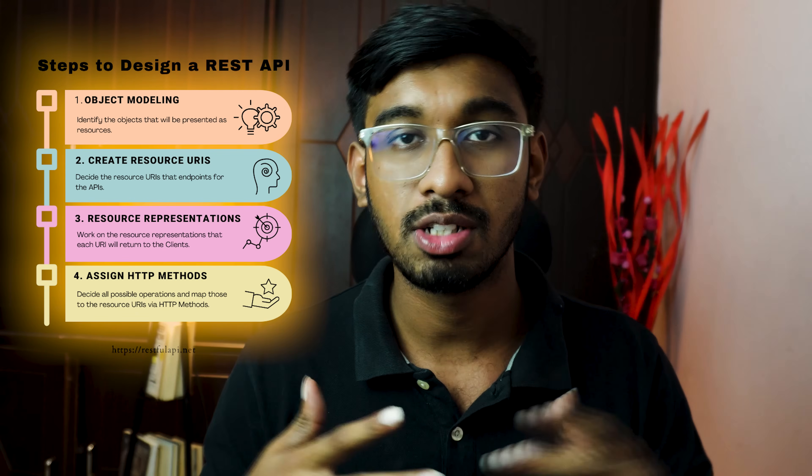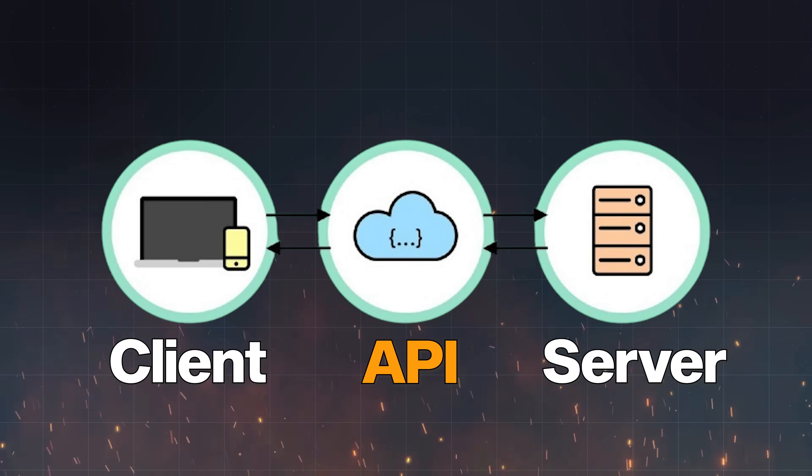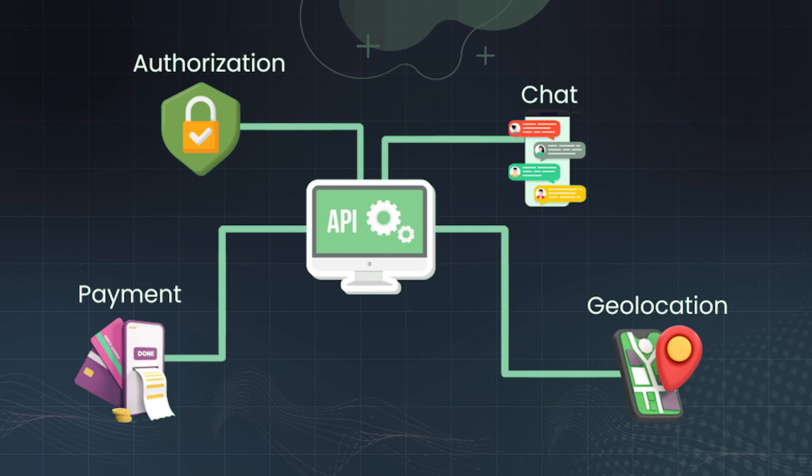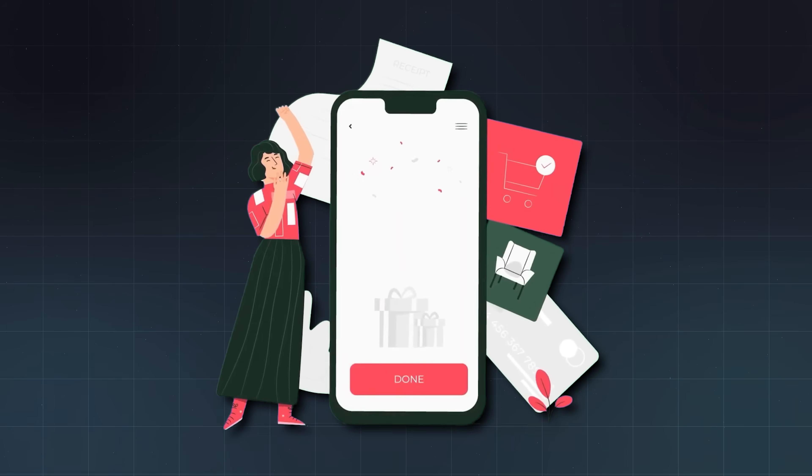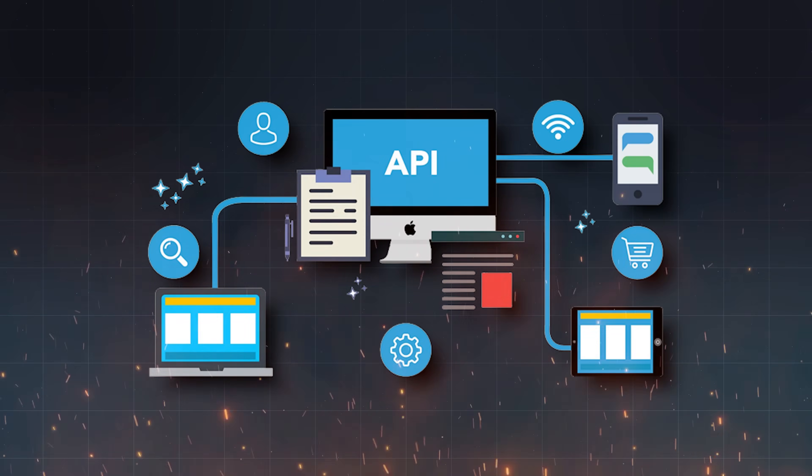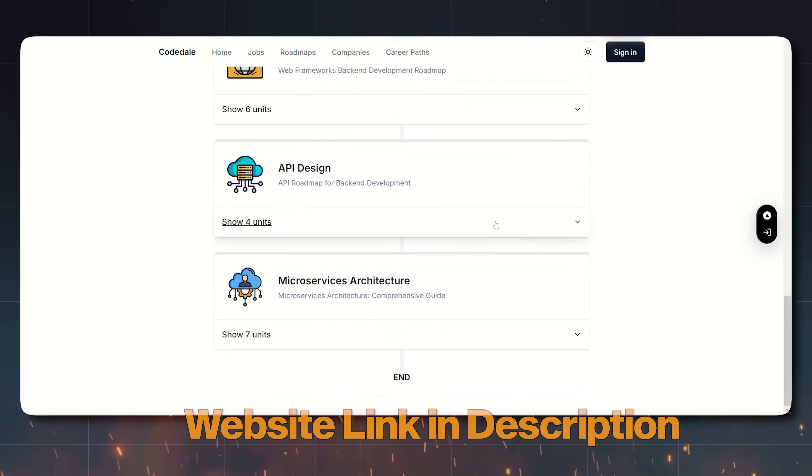At the advanced level, we cover API design and microservices architecture. Basically, an API is a set of rules and protocols so that different software components can communicate with each other. You can integrate different software components using APIs. For example, if you have an online website with a payment page using Razorpay, that's a third-party integration via API. APIs work over HTTP and network layers — REST API, GraphQL, etc. This gives a basic idea of how APIs work.